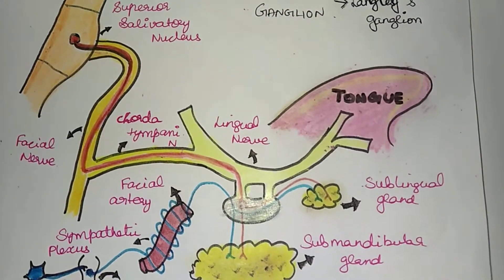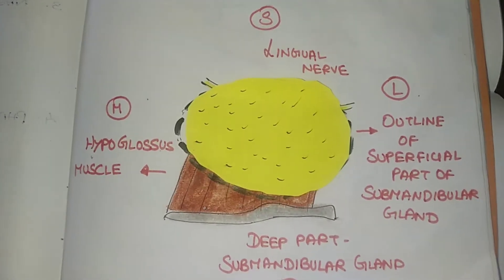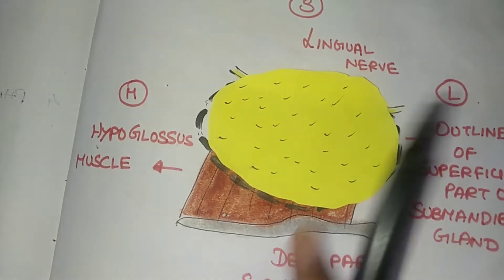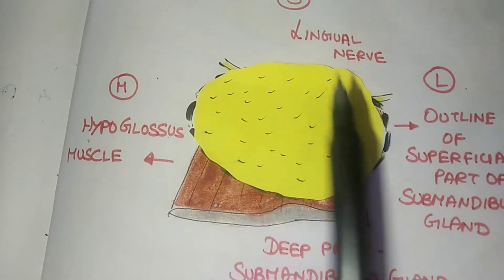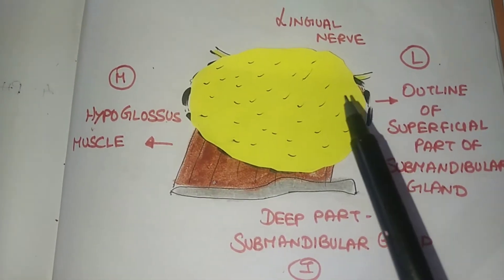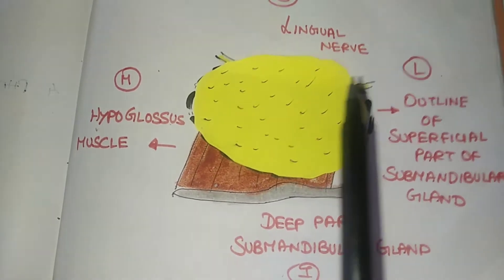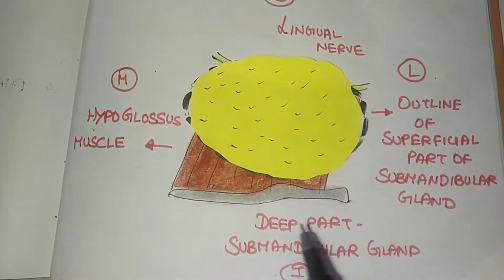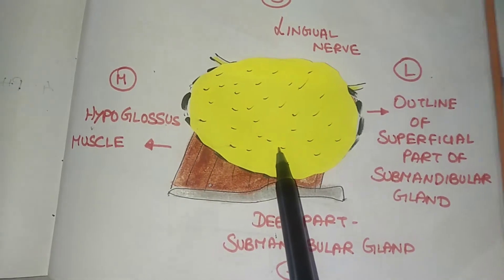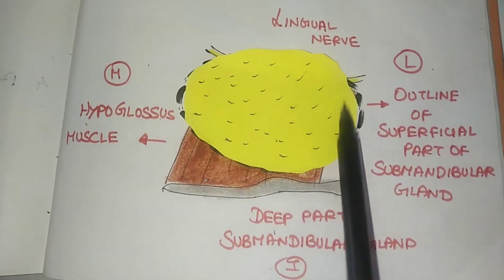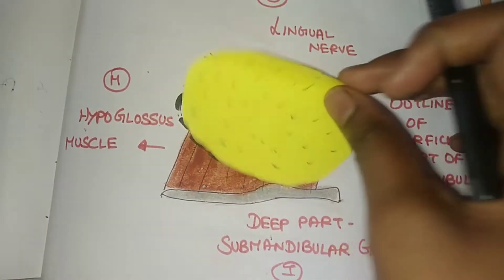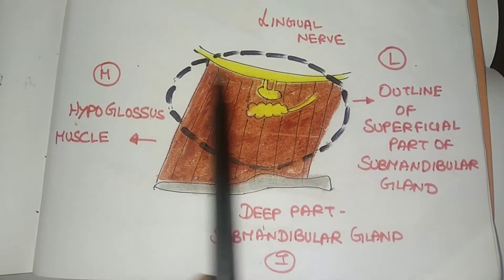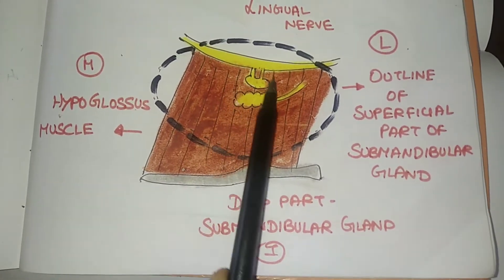We will look at the relations of the submandibular ganglion. We can see the superficial part and the deep part of the submandibular gland. The deep structures include the lingual nerve and the hypoglossal. The lingual nerve is the above relation of the submandibular ganglion.